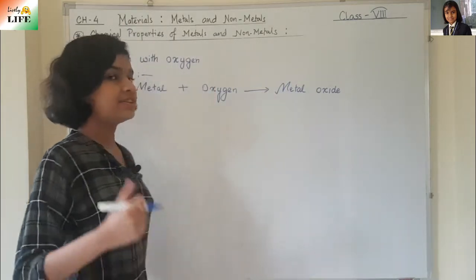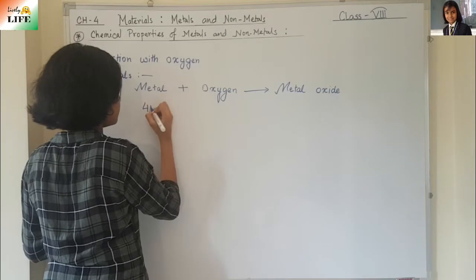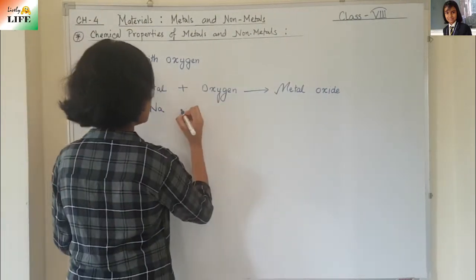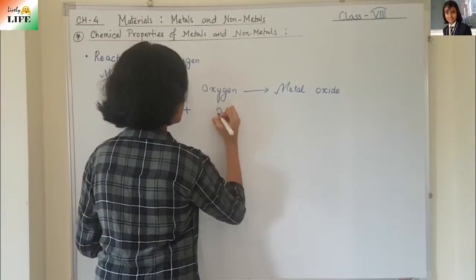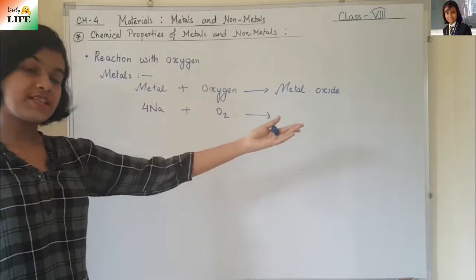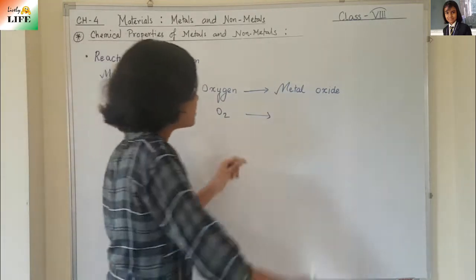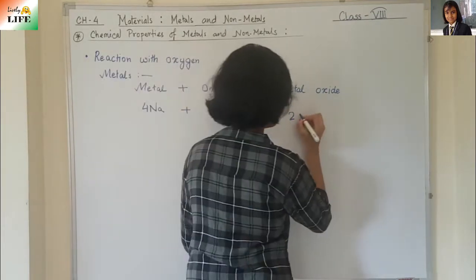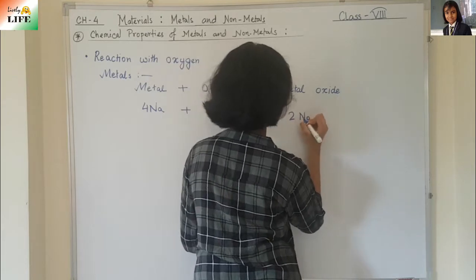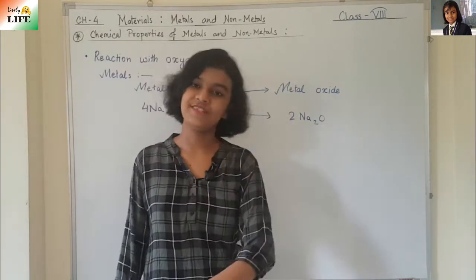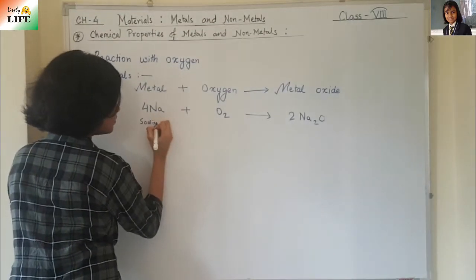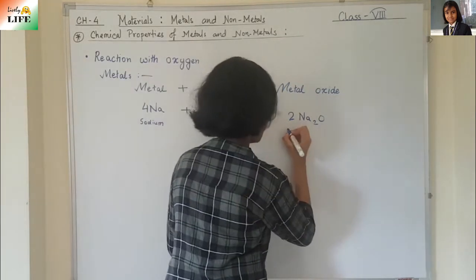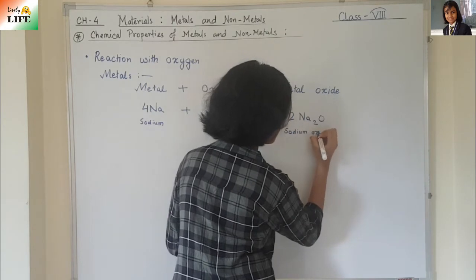For example, let's take sodium. Na is sodium, and sodium is a metal. So, 4Na + O₂ forms its metal oxide — sodium with oxygen will form sodium oxide. The formula of sodium oxide is Na₂O. It forms two sodium oxide, so 2Na₂O. Sodium with oxygen forms sodium oxide.